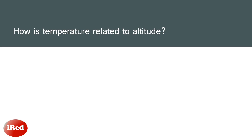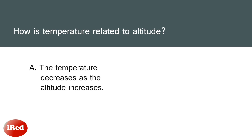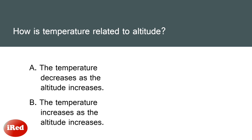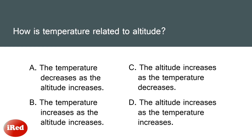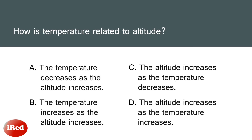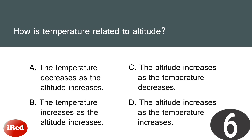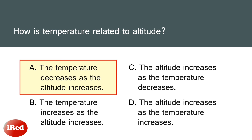Last question: How is temperature related to altitude? A) The temperature decreases as the altitude increases, B) The temperature increases as the altitude increases, C) The altitude increases as the temperature decreases, or D) The altitude increases as the temperature increases. The correct answer is letter A — the temperature decreases as the altitude increases.